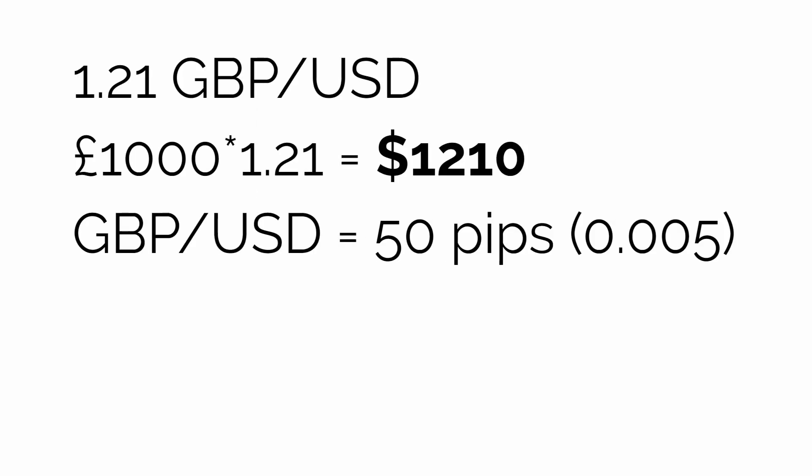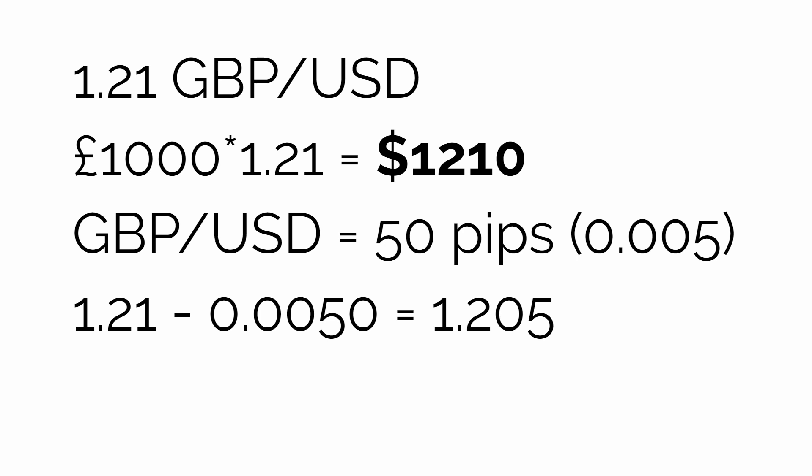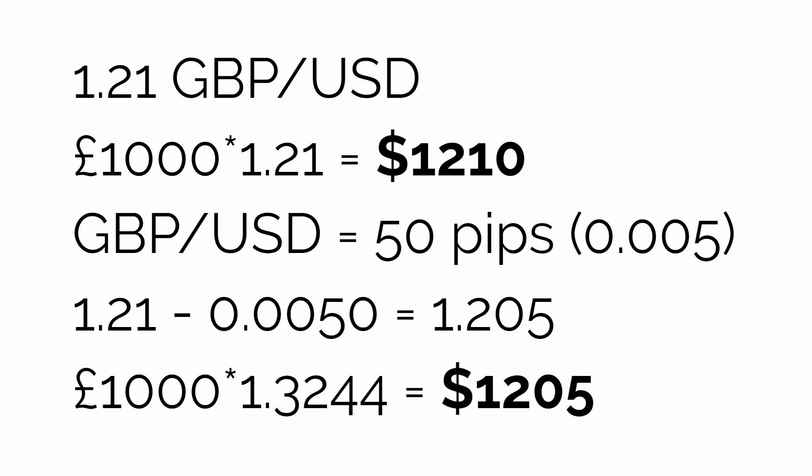We take the conversion rate and subtract that with 50 pips, so we are left with 1.205. This means after the fees, you would have $1,205, which means there is a $5 fee. But again, this just depends on how much you convert — if you convert $10,000, it'll be $50 in fees. And eToro will be sending you a nice thank-you email.